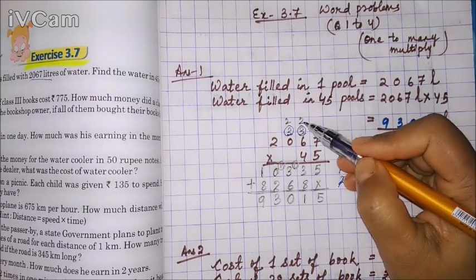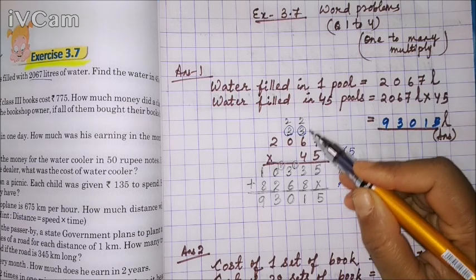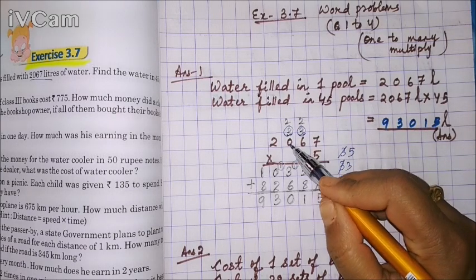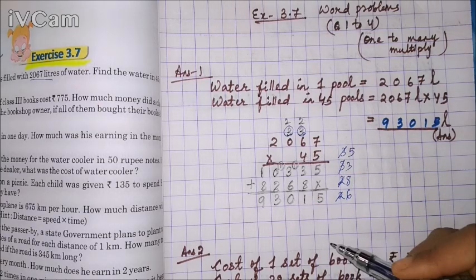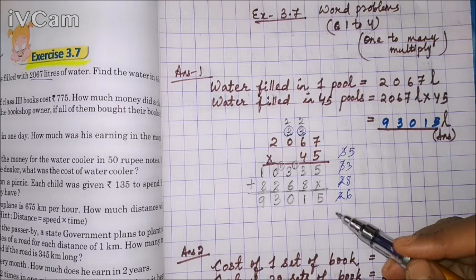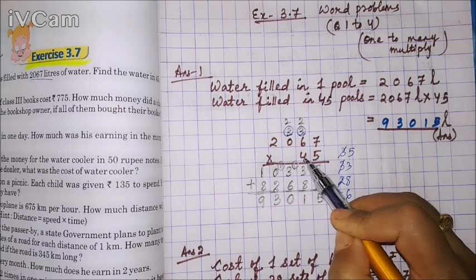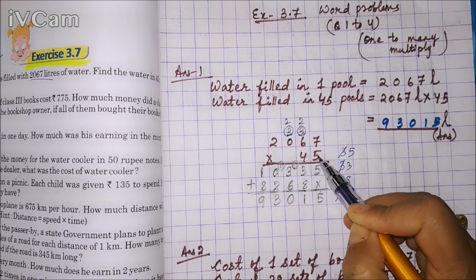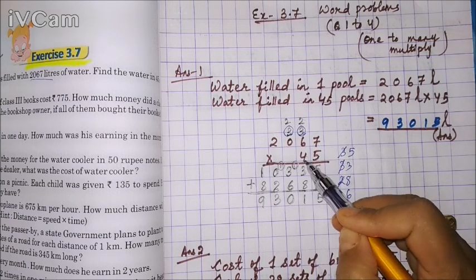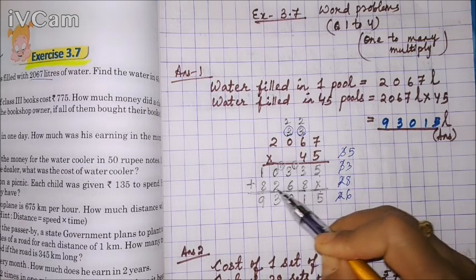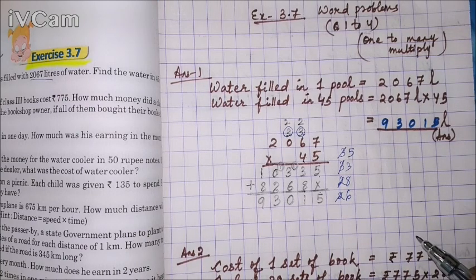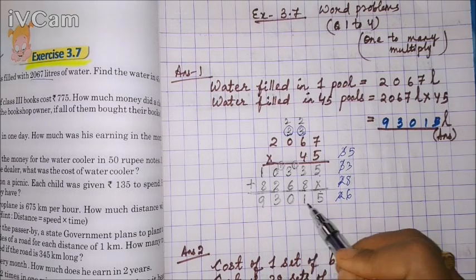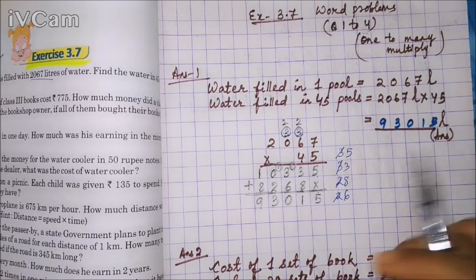Next multiply by 4. 4 × 7 = 28, write 8 carry 2. 4 × 6 = 24 + 2 = 26, write 6 carry 2. 4 × 0 = 0 + 2 = 2. 4 × 2 = 8. Remember: when multiplying by the tens-place digit, you start from the tens place onwards. Then add the two partial products.